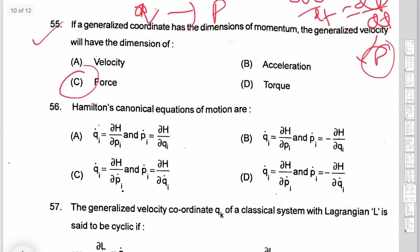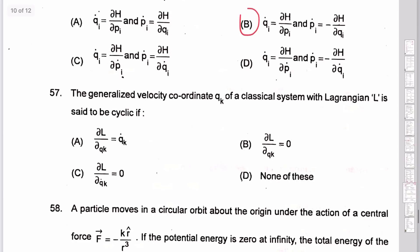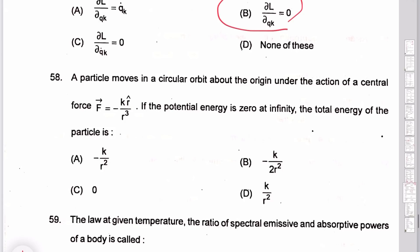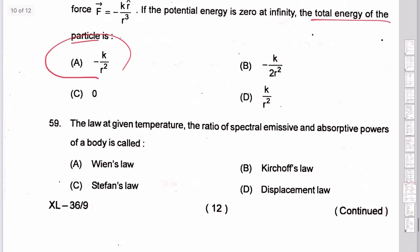Question 56: Hamilton's canonical equations — q̇ = ∂H/∂p, ṗ = −∂H/∂p; option B is the correct answer. Question 57: cyclic coordinate — Lagrangian is independent of position dq, so ∂L/∂q = 0; option B is the correct answer. Question 58: total energy of a particle in a circular orbit is negative — the calculated total energy is −k/r.